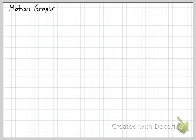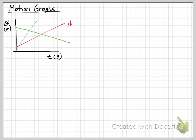Let's talk about motion graphs incorporating the definitions we just learned. We have a graph of position in meters versus time in seconds with three lines. Each line has a slope determined by rise over run. In this graph that's change in displacement over time — change in x over t. The variable on the y-axis is change in x, so that goes on top of the fraction, and time is on the x-axis, so it goes on the bottom. Change in x over t is our velocity equation.